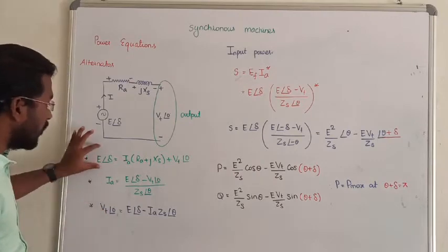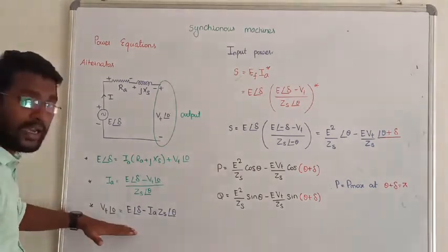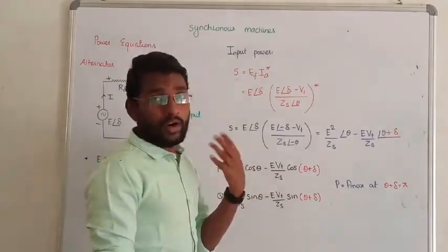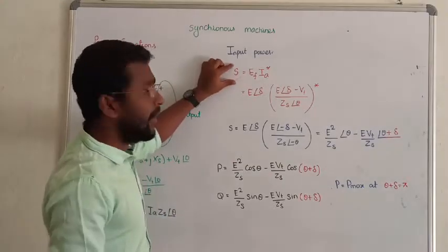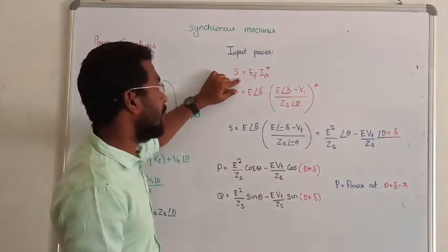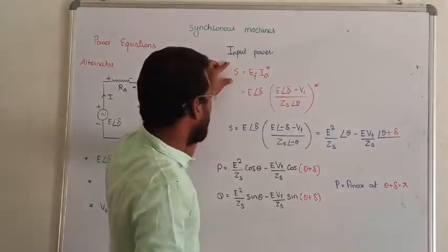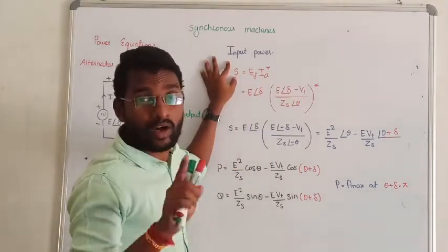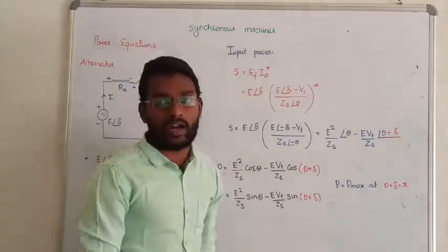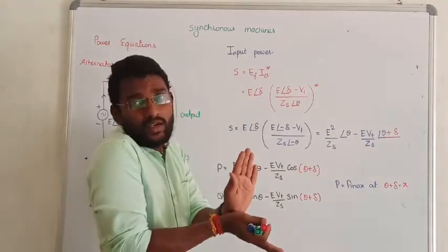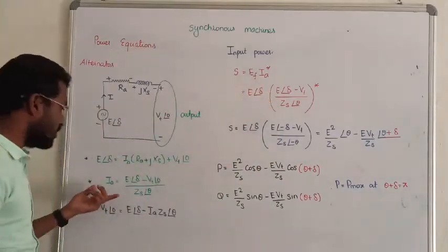The terminal voltage here is Vt. Moving to the next term: how we are going to develop the input power. Before the input power, we need the apparent power first. The apparent power formula is developed as voltage times current Ia conjugate. In apparent power, you always have to take the conjugate for one parameter — either voltage or current — to show the phase difference between voltage and current.